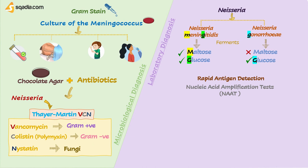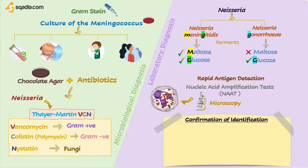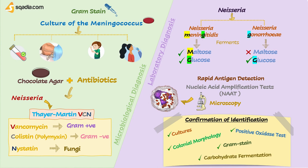Rapid antigen detection or nucleic acid amplification tests on CSF and blood are sensitive and reliable. Provisional identification is by microscopy when kidney-shaped gram-negative cocci are seen within polymorphonucleocytes. Confirmation of identification is based on cultures, colonial morphology, gram-stain appearance, positive oxidase tests, and biochemical reactions including the carbohydrate fermentation discussed.